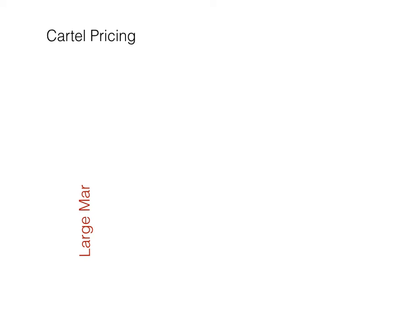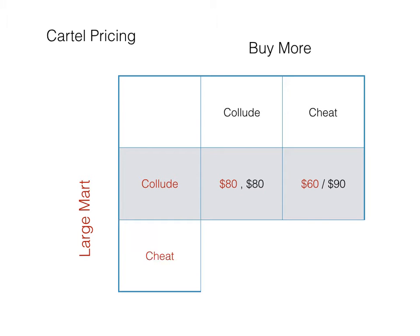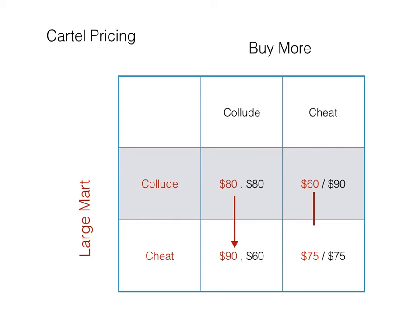We can look at this using game theory — here's Large Mart and Buy More again. They can either collude or cheat. If they both collude, they agree to sell 20 units each at $6, and both end up with $80 in profit. If they both cheat, they both end up selling 25 units at $5 each, ending up with $75 profit. It's in their mutual interest to collude; however, it's in their individual interest for each firm to cheat, but combined that puts them in a worse situation. The best option is to collude, but the best individual option for both Large Mart and Buy More is to cheat, making it very difficult to get the other firm to go along with a collusive agreement.